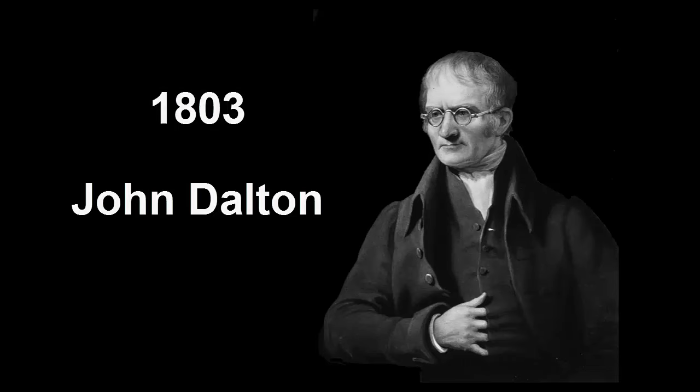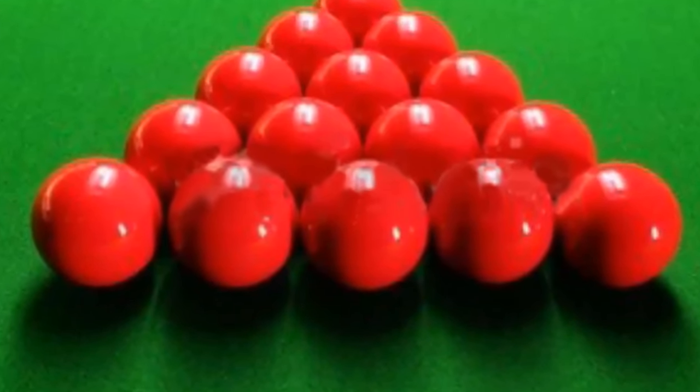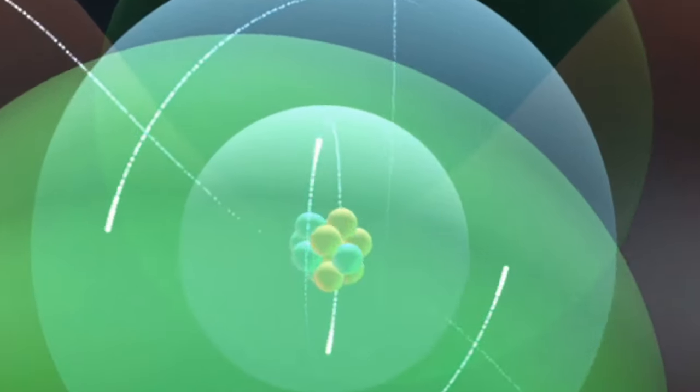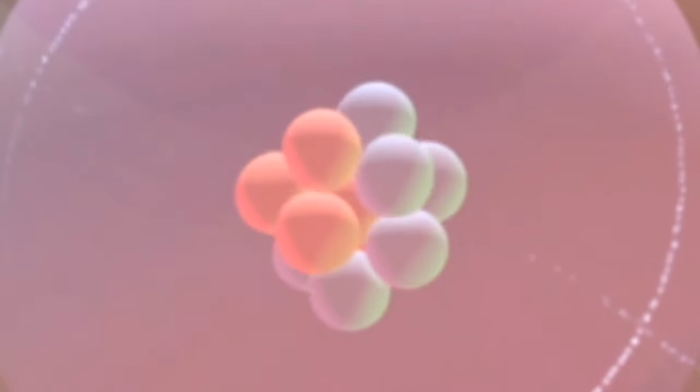Dalton thought that atoms were solid spheres like billiard balls and that they were the smallest particles in the universe. But about a hundred years later, scientists discovered that atoms were made of even smaller particles. This video shows how they were able to do that.